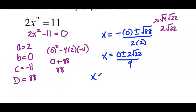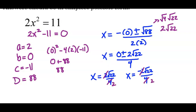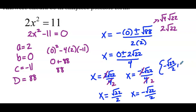So x equals 0 plus or minus 2 times the square root of 22 over 4. Separating them: x equals 2 times the square root of 22 over 4, and x equals negative 2 times the square root of 22 over 4. The 2 and the 4 simplify in each case. So x equals the square root of 22 over 2, or x equals negative square root of 22 over 2. Our solution set is negative square root of 22 over 2 and square root of 22 over 2. This example emphasizes what happens when we're missing a term — we just make that variable 0 and proceed with the quadratic formula.